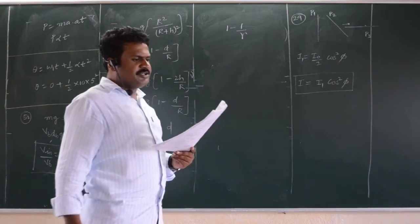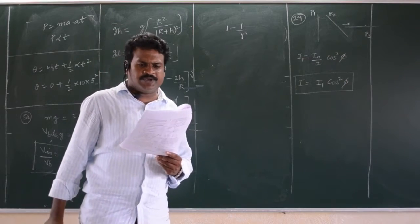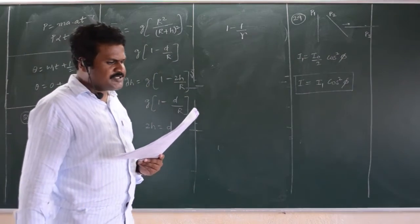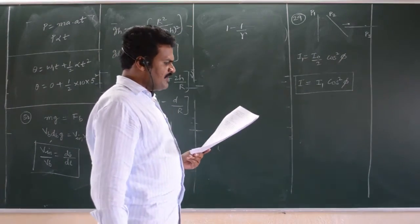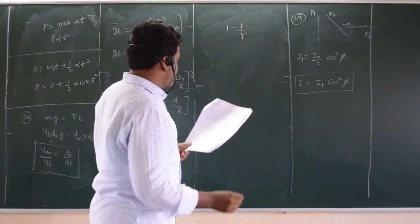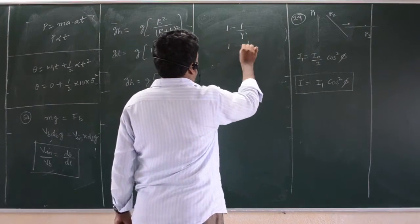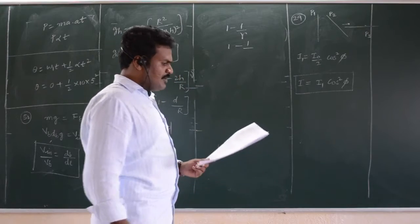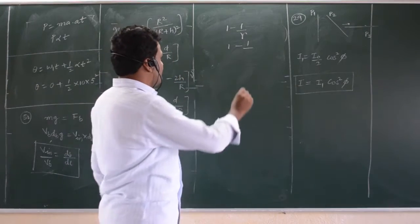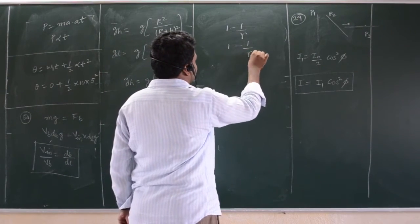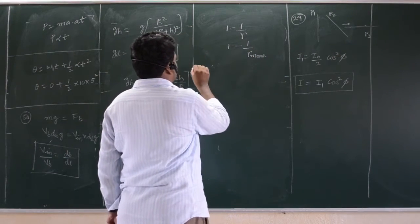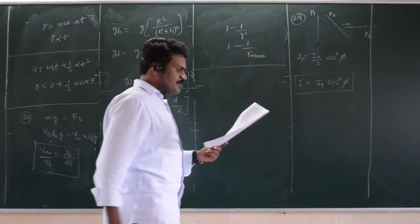Next question, what is asking: a certain amount of heat energy is supplied to a monatomic ideal gas which expands at constant pressure. What fraction of heat energy is converted into work? So, 1 minus 1 by gamma. Gamma value of monatomic gas, you substitute gamma value of monatomic gas, you will get the answer. 5 by 3 if you substitute.